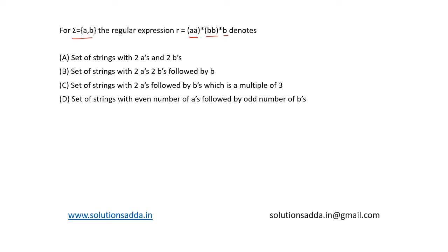Option a, set of strings with two a's and two b's. This is false. A counter example would be a, a, b, b, b. This is not a set of strings with two a's and two b's. We have actually three b's here.